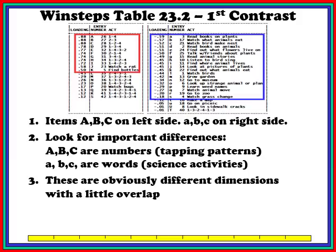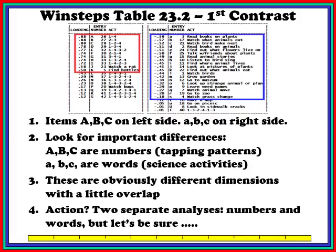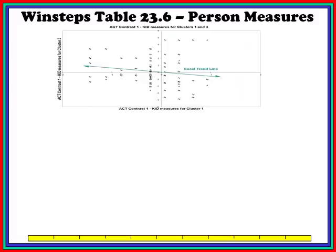These two sets of items are obviously different. There's a little bit of overlap — a few words in the first column and a few numbers at the bottom of the second — but we can see what the split is. So we need to consider what action to take: is this two strands, is it accidental, is this two analyses, or maybe a set of items to be deleted that shouldn't have been there? But there is one more check before we do anything difficult to undo. We want to check WinSTEPS table 23.6: do our clusters measure different dimensions or the same one differently?